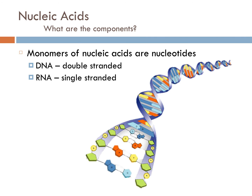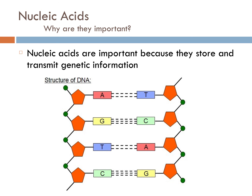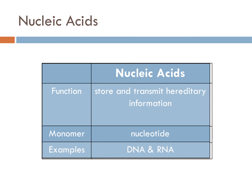Finally, we have nucleic acids. The monomers of nucleic acids are nucleotides, and examples of some nucleic acids are DNA and RNA. Nucleic acids are important because they store and transmit genetic information and they also hold the codes for making proteins. To summarize: nucleic acids store and transmit hereditary information, the monomers are nucleotides, and examples are DNA and RNA.